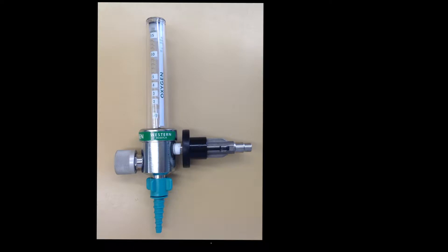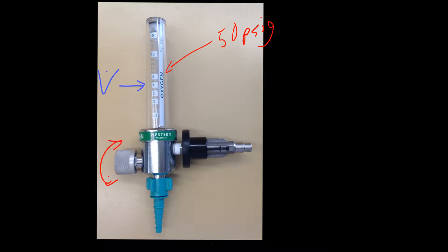Here we have a basic back pressure compensated flow meter. Right here is where it plugs into the wall outlet, which is hooked up to 50 psi. It could be a tank with a regulator or any kind of gas source, but it's designed to work within the Thorpe tube here at 50 psi — we often call it 50 pounds per square inch gauge. Within this we've got our Thorpe tube, and there's a little ball that moves up and down and indicates the flow rate. We adjust that by adjusting this needle valve. By turning the needle valve, we reduce the resistance and allow flow to come through the device out to the bottom, which can be hooked up to our oxygen tubing, nasal cannula, or any device where we need oxygen or whatever gas we're working with.